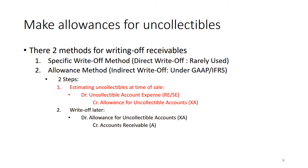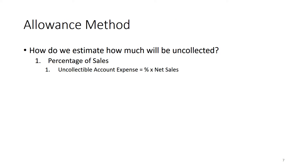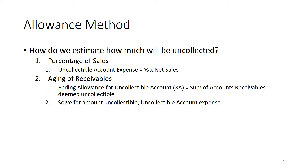The question becomes: how do we make the estimation for the amount? There are two methodologies. The first is known as percentage of credit sales — a one-step system where the uncollectible account expense is calculated directly as a percent of net sales.